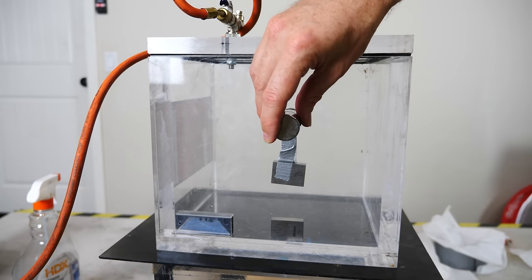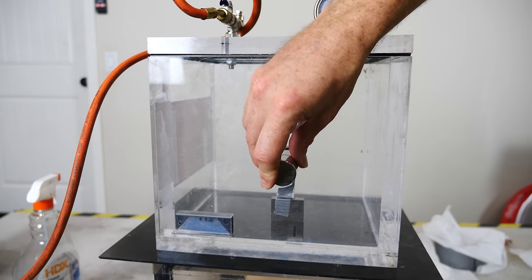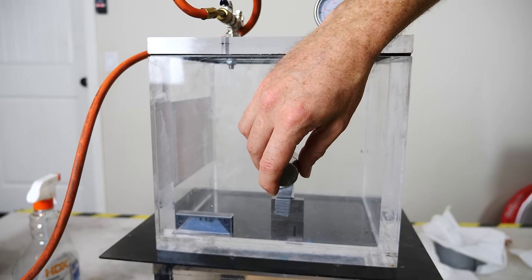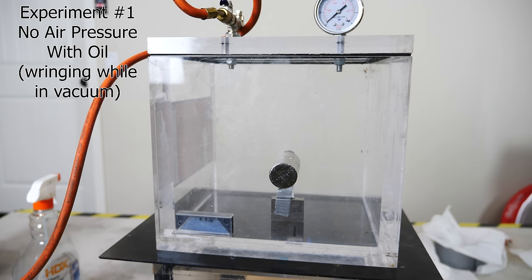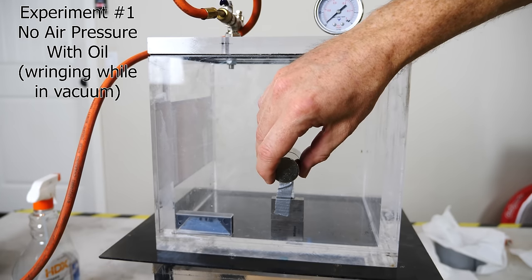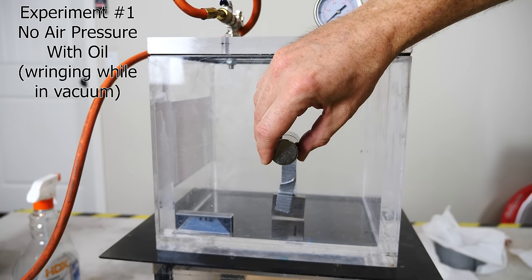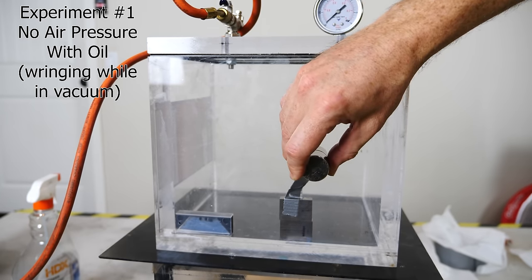Okay, we're at a full vacuum in here now. Let's move the gauge block down. Sit there for a bit. So in this first experiment, the gauge blocks have a little bit of oil in them, but we're going to have no air pressure around them. And we'll see if we can ring them together while they're in the vacuum.